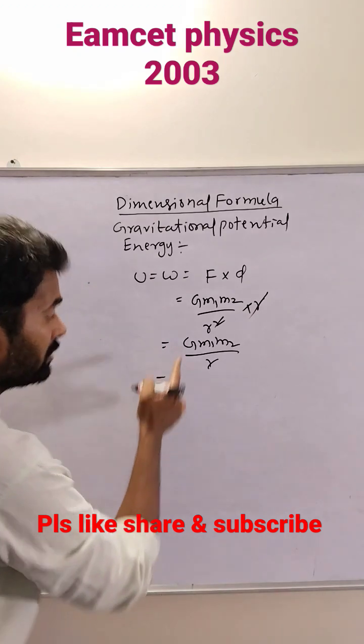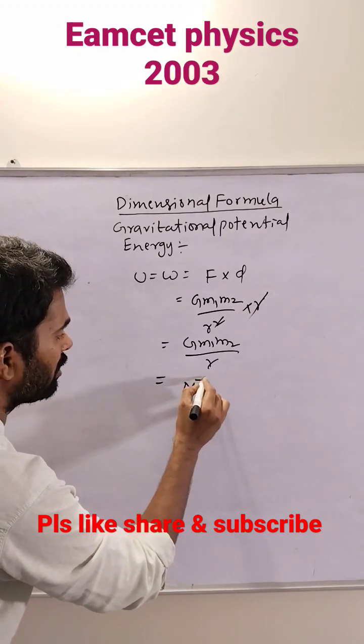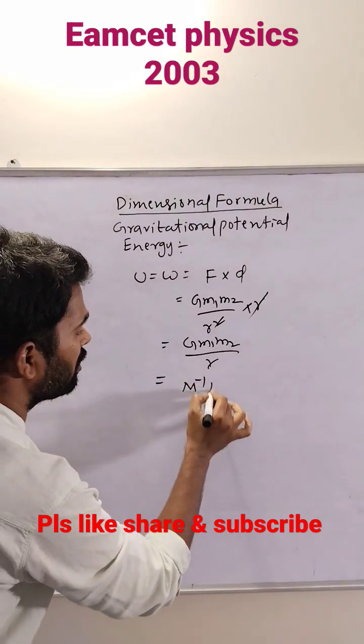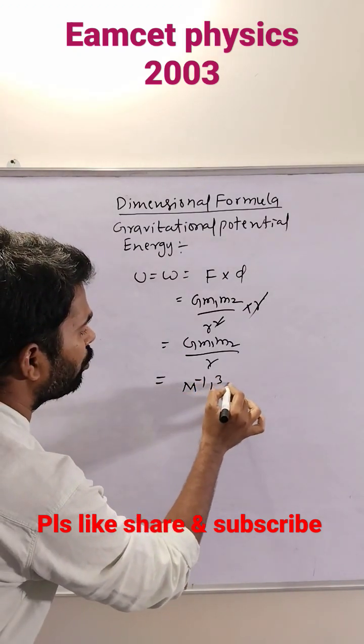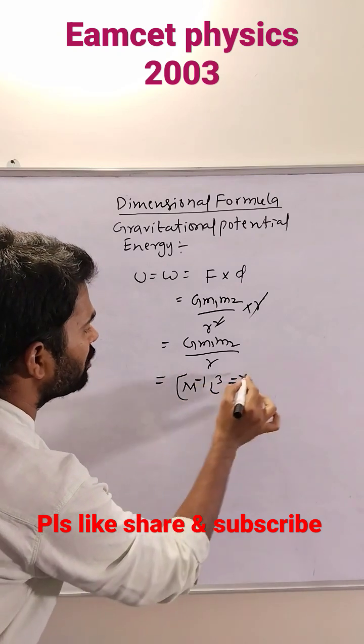The dimensional formula of G — the universal gravitational constant — is M inverse L cube T power minus 2.